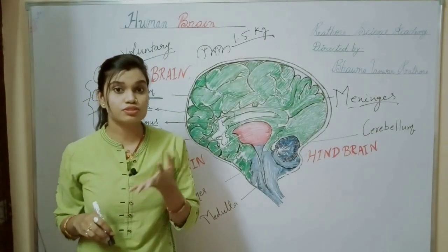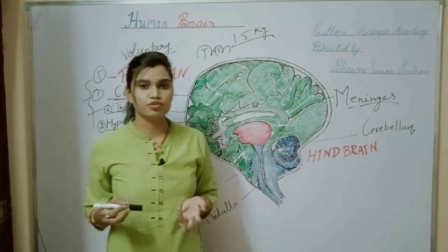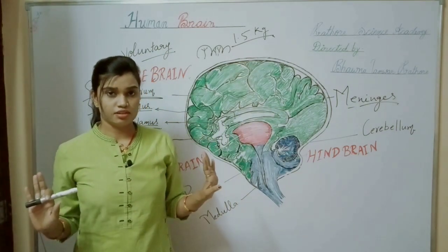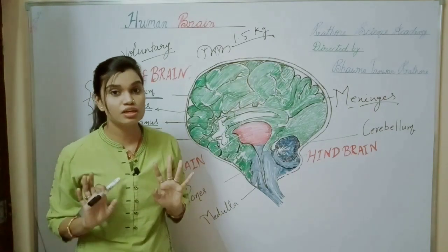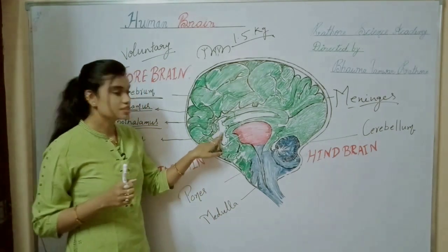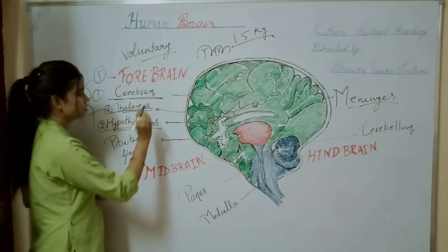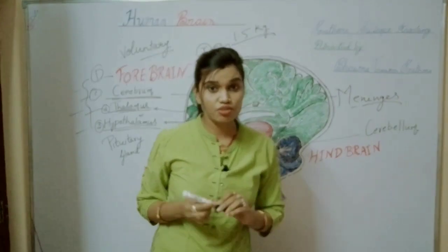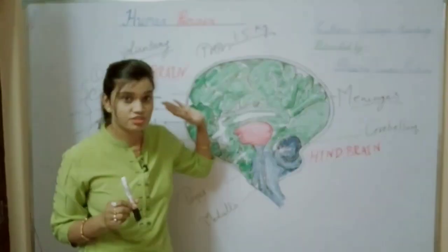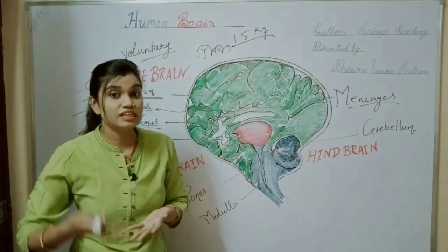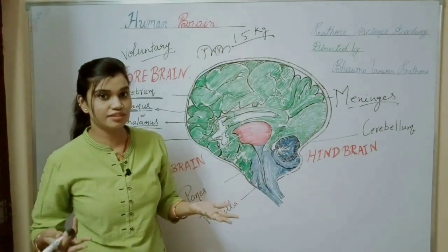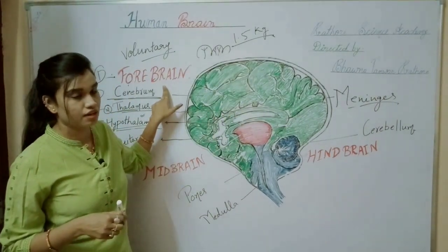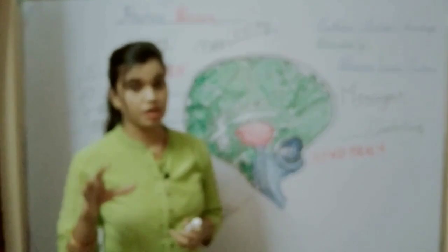Also, thirst and hunger — you feel hungry, you feel thirsty — and after having a meal you feel like you have had enough. That feeling of fullness also comes from the hypothalamus. So collectively, the function of the forebrain is: it provides intelligence, all feelings, emotions, thinking, and planning. All this comes under the forebrain.